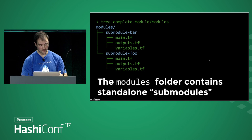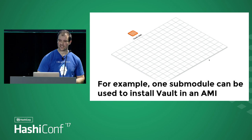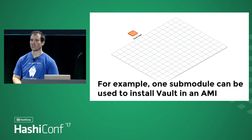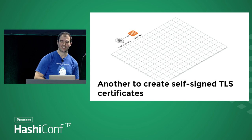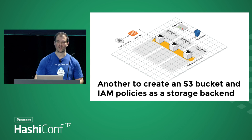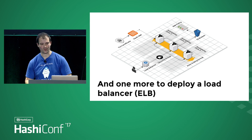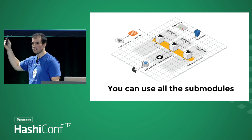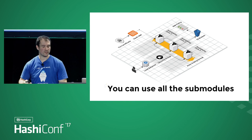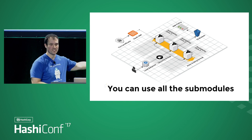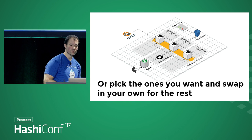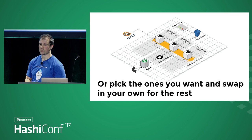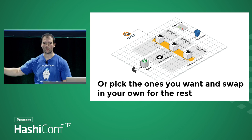The submodules are all standalone — that's the key. If you design it correctly, each submodule handles one use case: one to build the Amazon machine image with Vault and TLS cert installed, a separate one to run the cluster, one for the S3 bucket, one for security group rules, one for the load balancer. You're welcome to use all of these together. If this is exactly what you wanted, you're done. But if you have custom needs — and everyone has a little bit of custom — you'll probably use 80% of this, and the 20% you want to customize you can swap out for your own code. Maybe you use a different load balancer or Chef to configure your servers.